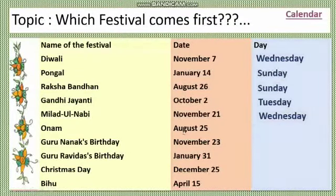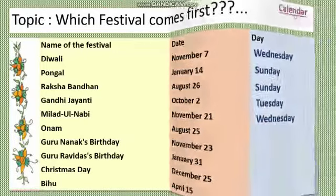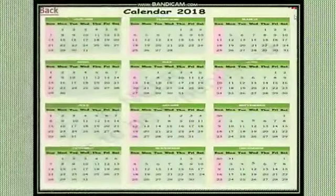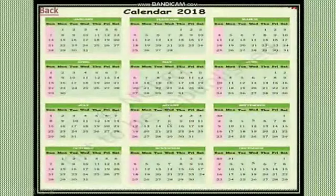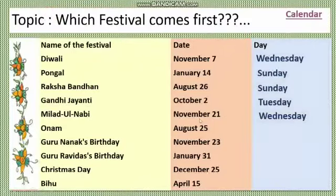Then August 25th is Onam festival. Let's see August 25th — July, August. Here is August's 25th. Which day is the 25th? Saturday. So your answer is Saturday.